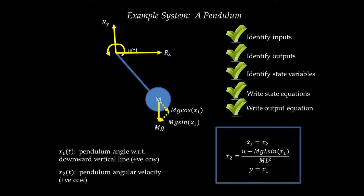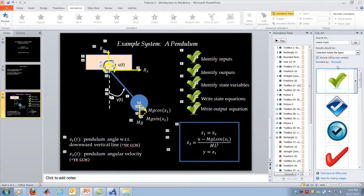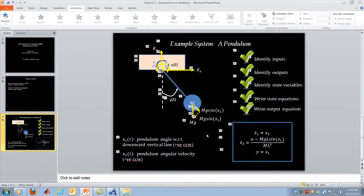What we've accomplished so far is building a simple state-space representation for the dynamics of a very simple rotational mechanical system. We've accomplished the first of the two goals: going through a simple rotational mechanical system and deriving its state-space model.